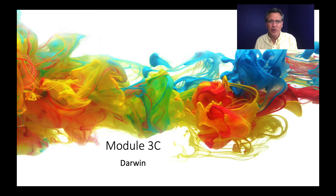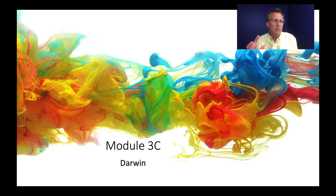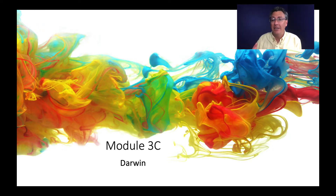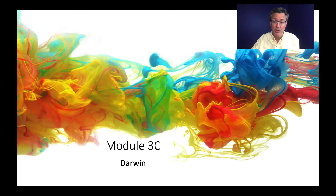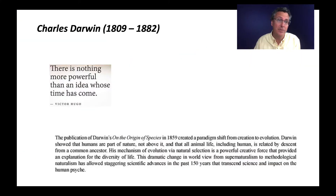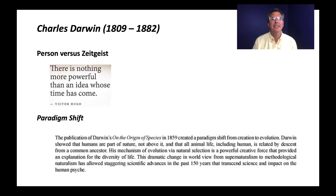So I know that by a third year course you have a really good sense of Darwin and his impact. So I'm going to focus more on what his work meant in a psychological context, but I'm also going to start a little bit with history of psychology stuff. I want to use Darwin to echo some of the themes that we talked about in the very first module — these two themes specifically.